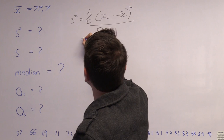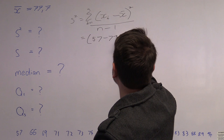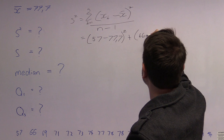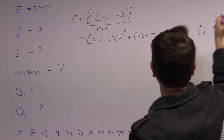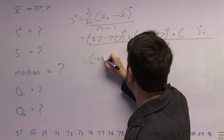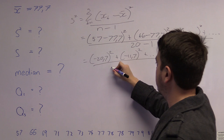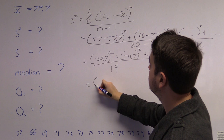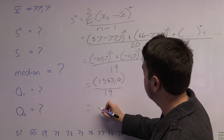If we take this formula and substitute all the values, we get (57 minus 77.7) squared plus (66 minus 77.7) squared, and so on for all values, divided by 20 minus 1, which is 19. That gives us approximately (−20.7) squared plus (−11.7) squared and so on, divided by 19. That should give us a total of 1363.4 divided by 19, which equals 71.76.